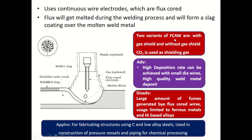There are two variants of flux cored arc welding: one with gas shield and one without gas shield. The purpose of gas shielding is to cover the welding area from contamination by atmospheric air. Usually a carbon dioxide based shielding gas is used. When gas shielding is not used, the flux itself contributes sufficient gas shielding in the welding area.